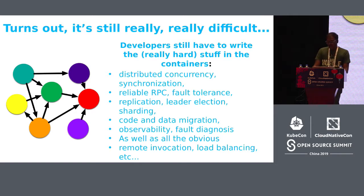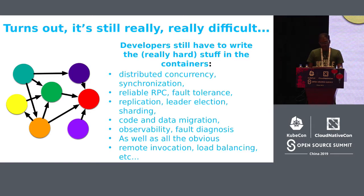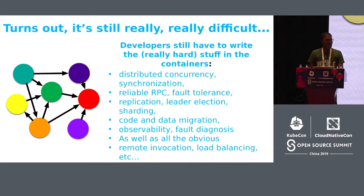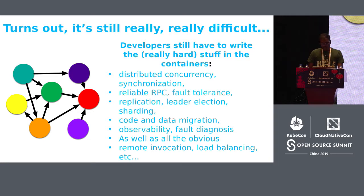However, the problem is somebody still has to write the code that runs in these containers. And it turns out it is very difficult to do it reliably in a way that gives the application properties that you want. Companies like Google and Amazon have been doing it for quite a long time, but they have somewhere around 100,000 pretty good software engineers working on building these resilient and scalable systems. A company building an end-user application doesn't necessarily have thousands of distributed systems engineers.